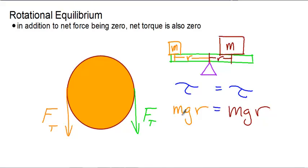And because this m is smaller, that means this r has to be bigger. So rotational equilibrium is when net forces and net torques are both equal to zero.